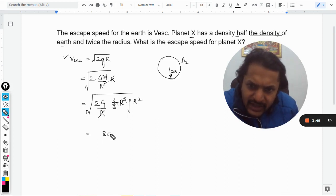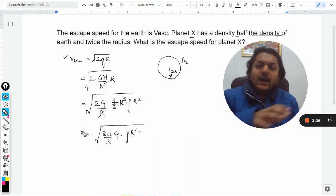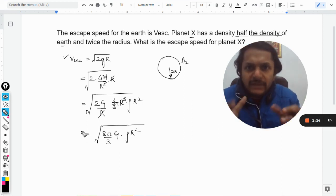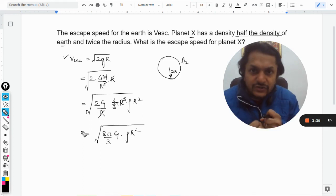So it will be 8 pi by 3 g into density r square. So this is another expression for the same thing, that is the escape velocity in the terms of density and the radius of the planet.